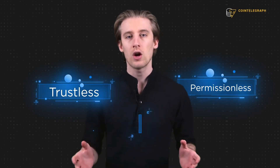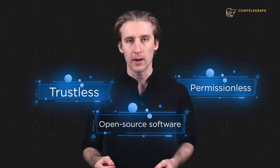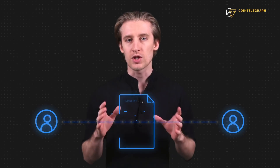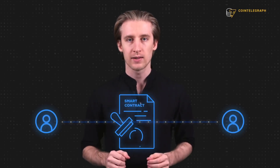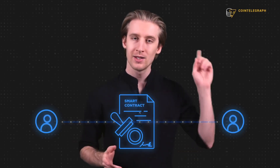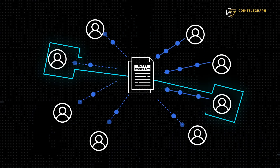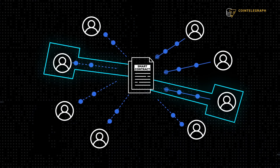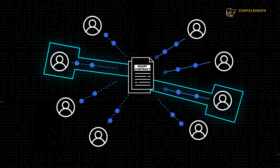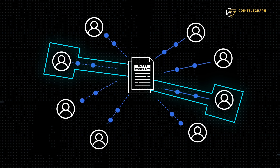Web 3.0 will also be open, which means it's trustless, permissionless, and largely built on open-source software. Trustless and permissionless mean that interactions can take place between two parties without the need for an intermediary. This is done with smart contracts. It's exactly like sending Bitcoin from one person to another — the whole process happens on the blockchain and there is no way anyone can interfere with it or stop it.